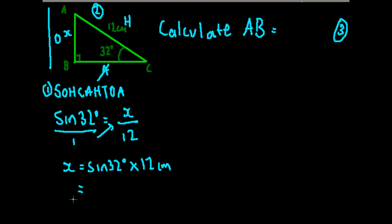You would work that on the calculator, which I'm going to do for you. Sine 32 times by 12 equals 6.35903. So I'll just write that all out here: 6.35903. That's the length of AB. They've said two decimal places, so 6.36 centimeters is our final answer, and that is three marks.